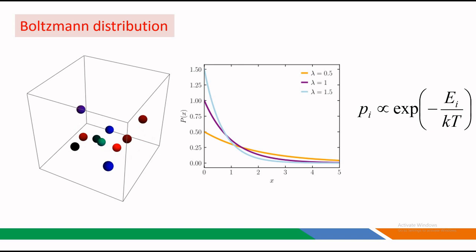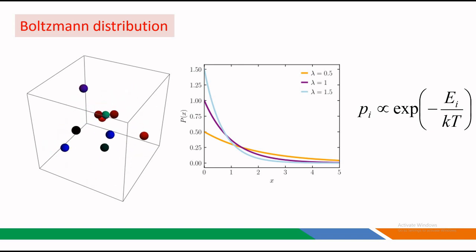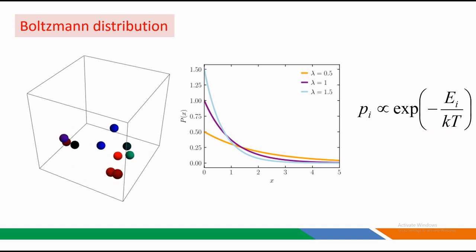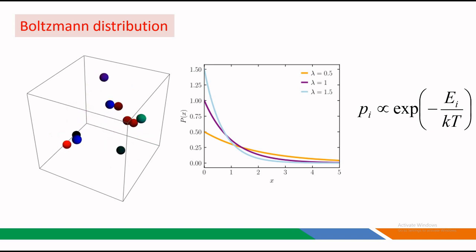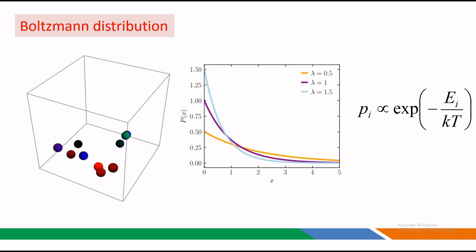The formula for Boltzmann distribution is given as Pi is proportional to exponential of minus Ei upon KT, where Pi is the probability of finding a particle with energy Ei, K is the Boltzmann constant, and T is the temperature of our system. Breaking it down: as the energy E increases, the probability decreases. This exponential relationship beautifully captures the statistical nature of our particle system.